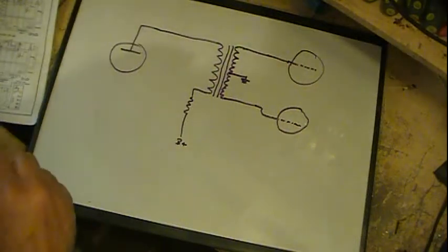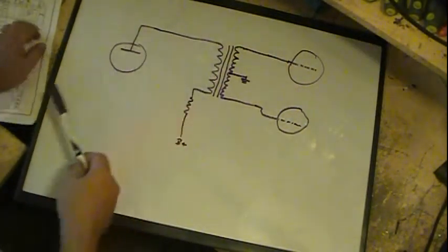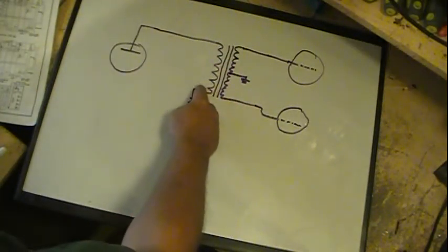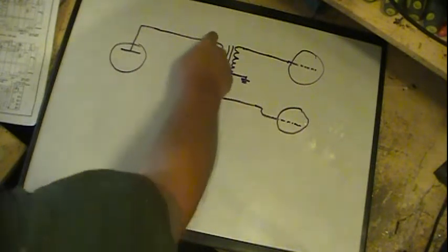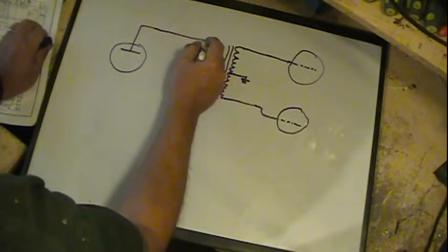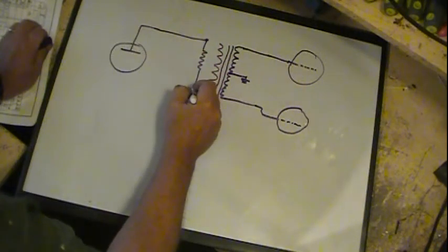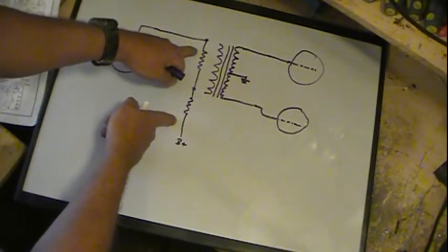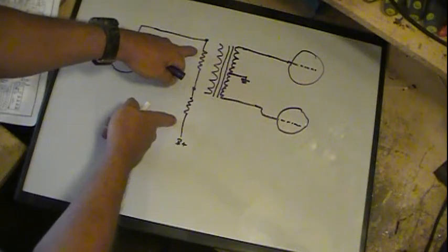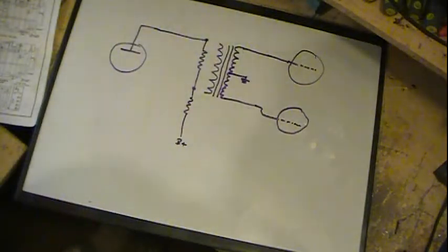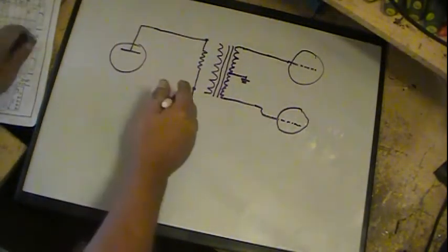Since the primary was dead, burned out, I disconnected it here and here. Put in another resistor in series with this one, bringing it up to about 29,000 ohms. Anywhere from 27,000 to 30,000 is fine for this particular 27 tube as a plate load.